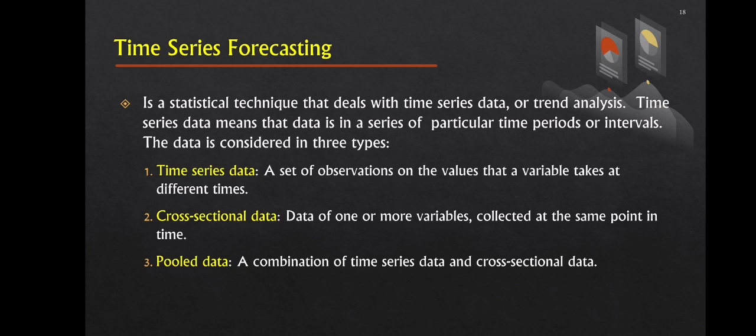Next, we have time series forecasting. Time series forecasting is a statistical technique for dealing with time series data, also known as trend analysis. Time series data is data that is organized in a series of specific time periods or intervals. There are three types of data to consider. First, we have time series data, which is a set of observations on the values that a variable takes at different times. The second is cross-sectional data, where data of one or more variables are collected at the same time or same point in time. And lastly, we have pooled data, which is a combination of time series data and cross-sectional data.